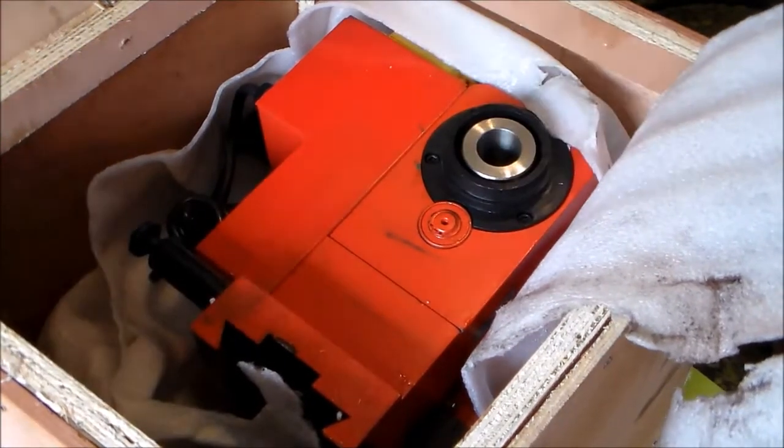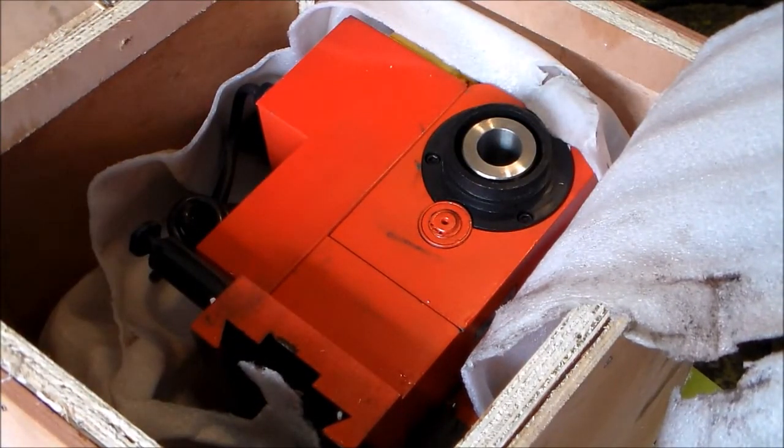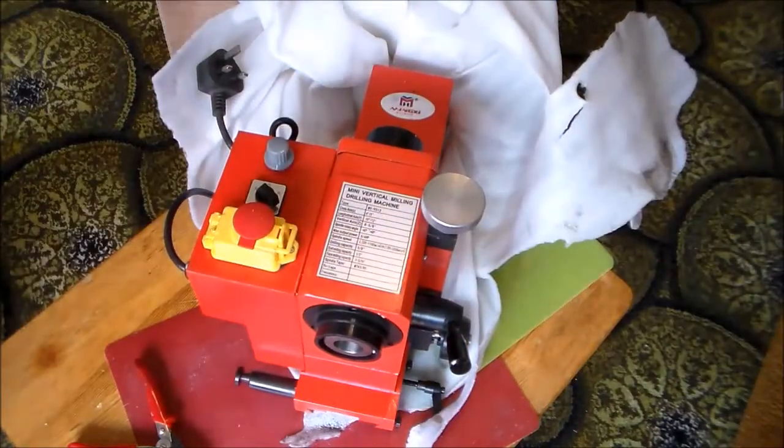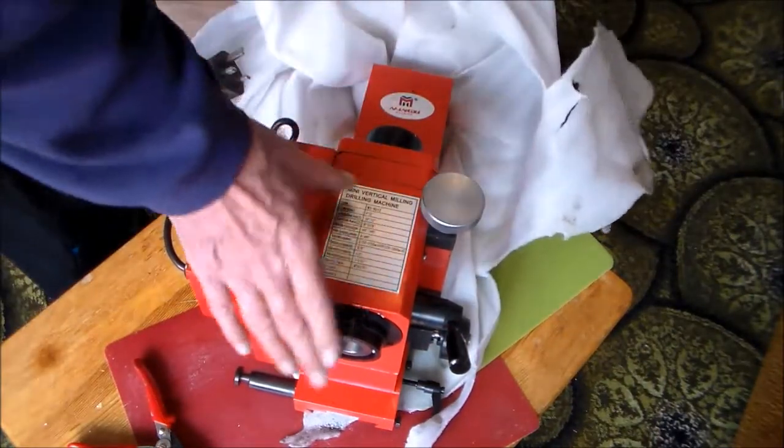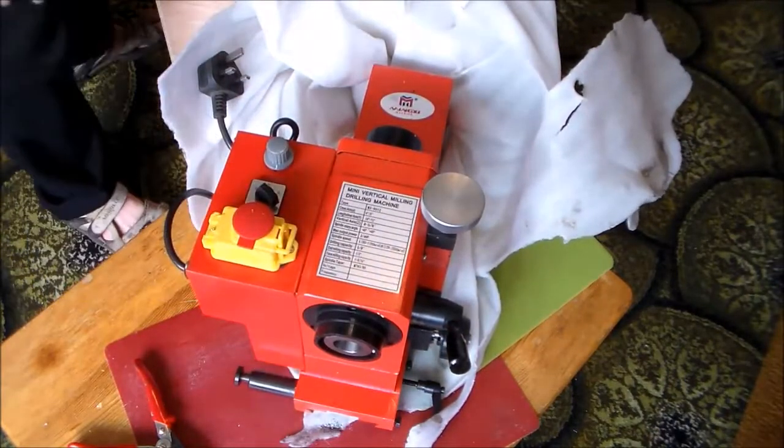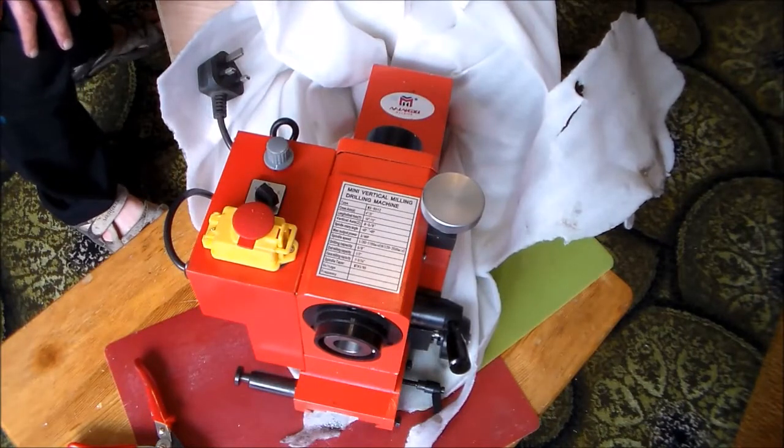That's the spindle. Yes, the spindle, should I say, in there. Out of the box, now I've just managed to lift it out, is the head of the mill. What else is left in the box?